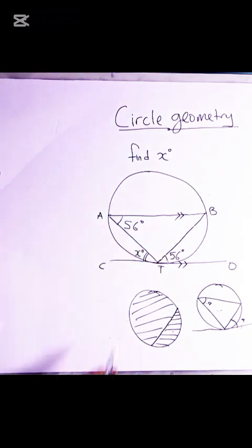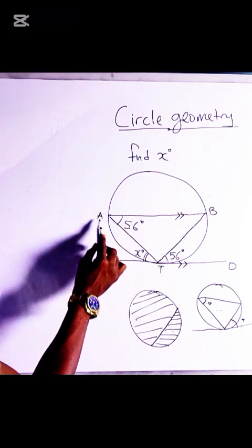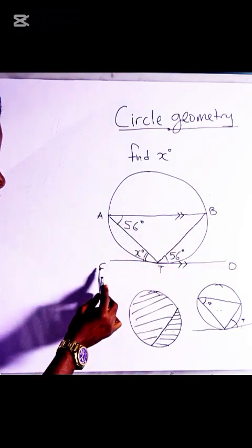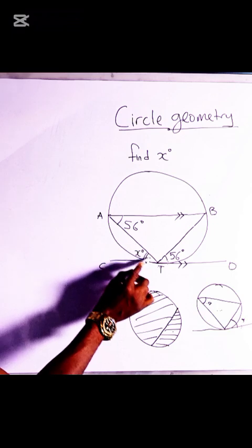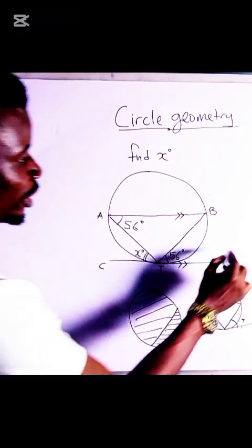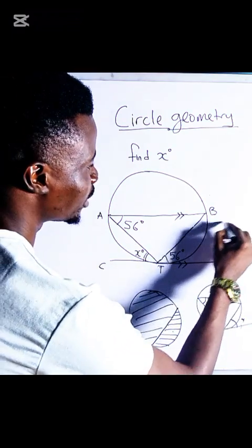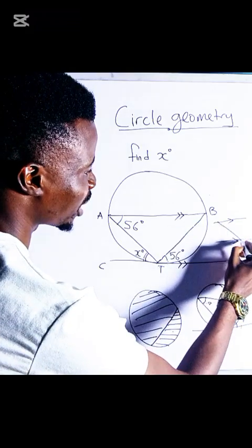Now how do we get x? We see that line AB and line CD are parallel. When there's a transversal between two parallel lines, if you have two parallel lines and a transversal, the angle made here will be alternate to the angle made here.